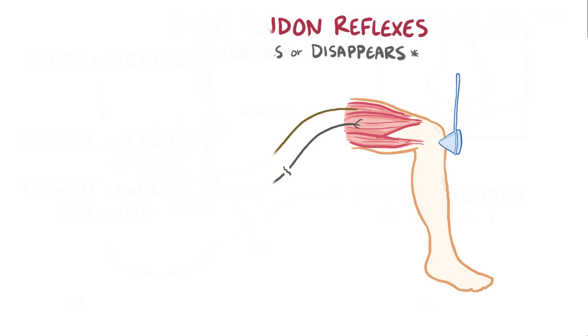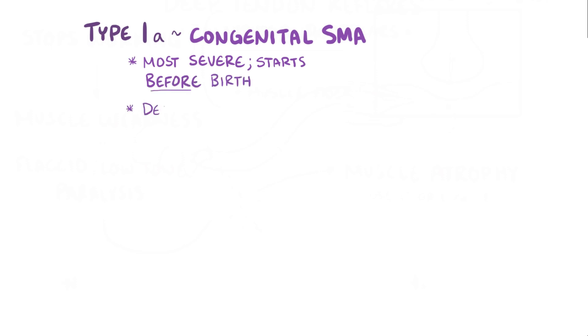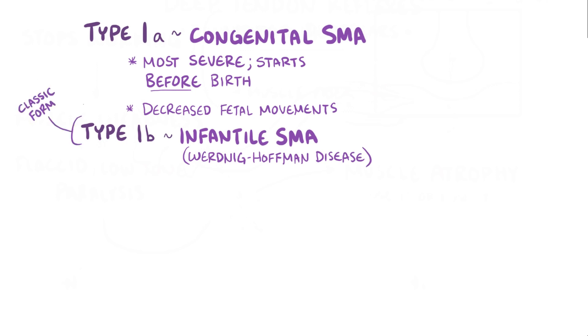Now, it turns out that there are a few types and subtypes of SMA. Type 1a, congenital SMA, is the most severe of all, and it starts even before birth, when mothers might notice decreased fetal movements. SMA type 1b, also called infantile SMA or Werdnig-Hoffmann disease, is the classic form where babies often appear normal at birth and then in the first few weeks of life develop hypotonia, or low muscle tone.